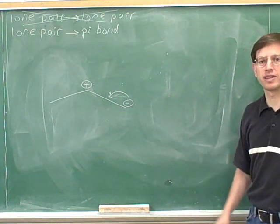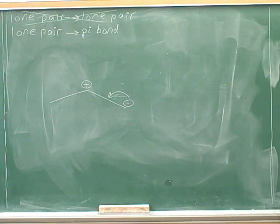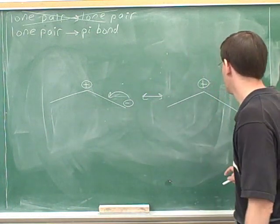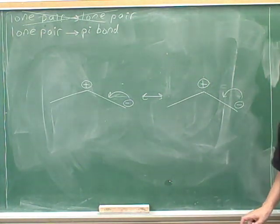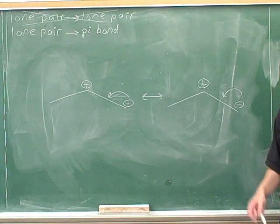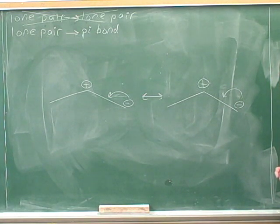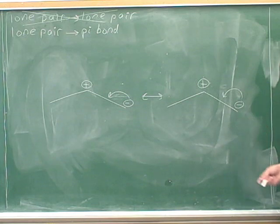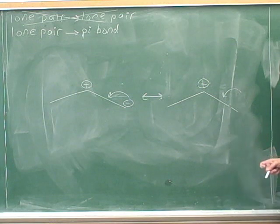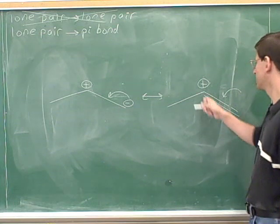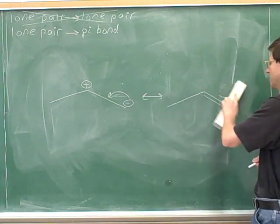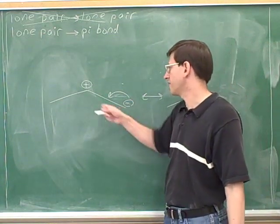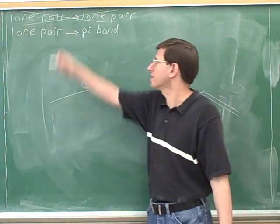Try to draw the resonance structure suggested by this electron-pushing arrow. We want to redraw and modify. We start by just redrawing the original picture, and now step by step we're going to modify it. The tail is on the negative charge, which means the electrons are coming from a lone pair. We don't need to erase the lone pair because we didn't draw it. However, we should erase the negative charge because this atom is losing the lone pair. The head indicates the electrons are going towards a pi bond. This carbon just gained a pi bond, so it should become less positive.